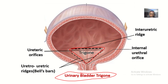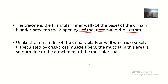This is one opening of the ureter, and this is another opening of the ureter. When you join them, that's the base of the triangle. This is the opening of the internal ureteral orifice — when you join here to here, they are forming the apex of the trigone of the bladder.